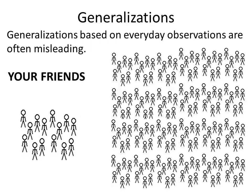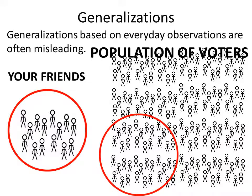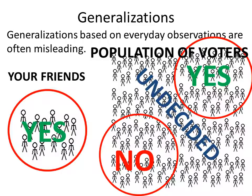Generalizations based on everyday observations are often misleading. Using the example in the text: suppose you observe that your friends plan to vote in favor of a school board measure to build new schools. Unless they are a good cross-section of the population and the electorate, it is likely you may be wrong. Some voters say yes, while another group may disagree and say no.